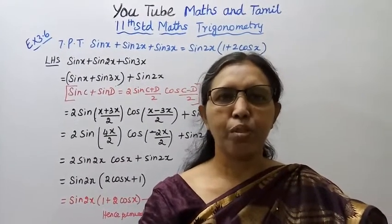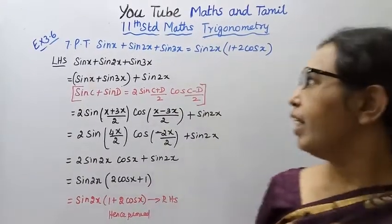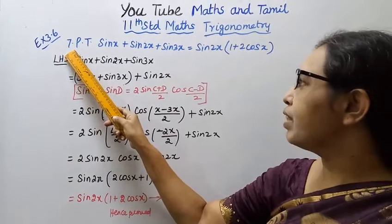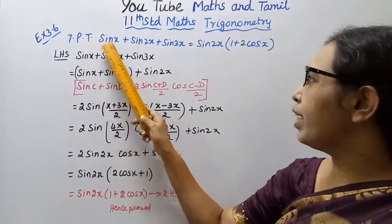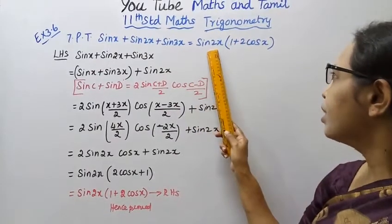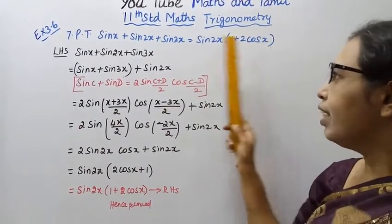Hello students, welcome to Maths and Tamil channel. 11th standard Maths Trigonometry Exercise 3.6, 7th problem. Prove that sin x plus sin 2x plus sin 3x equals sin 2x bracket 1 plus 2 cos x.